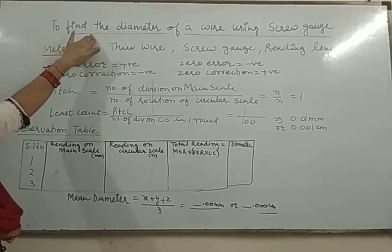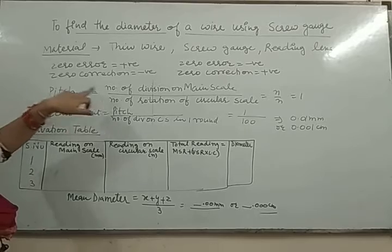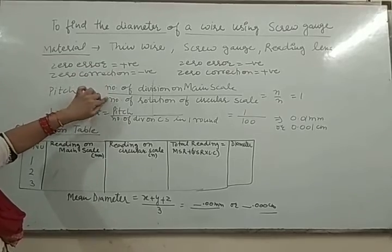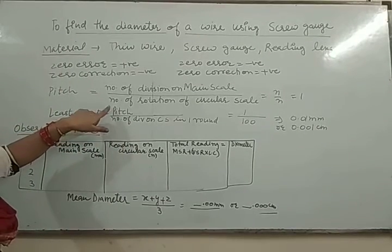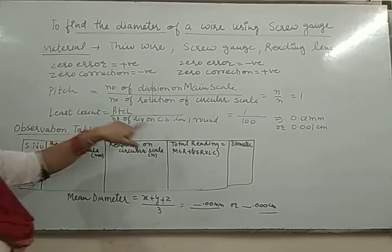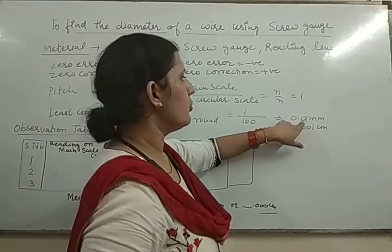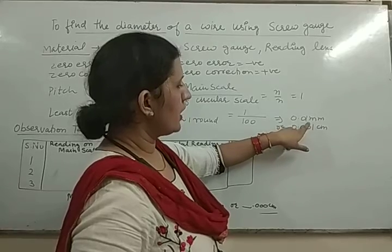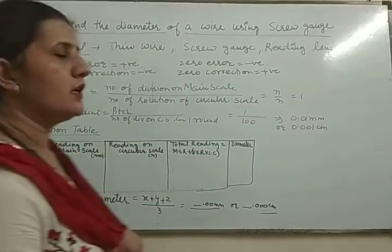First write the aim: to find the diameter of the wire using screw gauge. The pitch equals the number of divisions on the main scale divided by the number of rotations; in all cases both values are equal, so pitch is always 1. The least count is pitch divided by the number of divisions in one round. The circular scale has 100 divisions, so least count = 1/100 = 0.01 mm. You can convert it to centimeters: 0.001 cm. For answers in millimeters, use two decimal places; in centimeters, three decimal places.